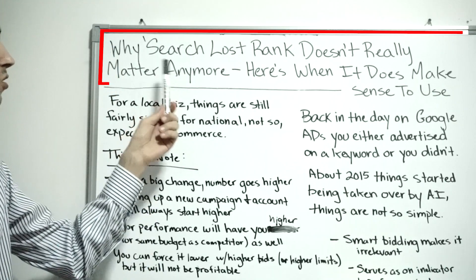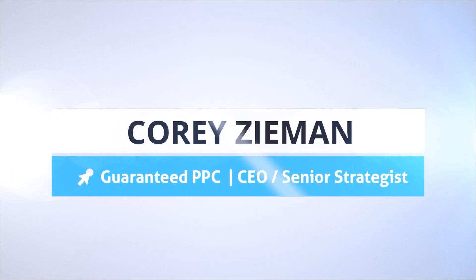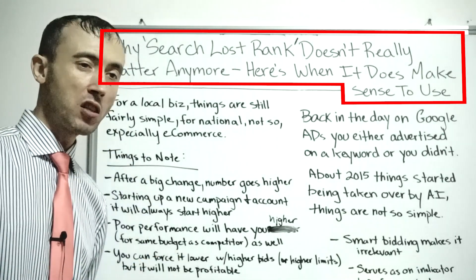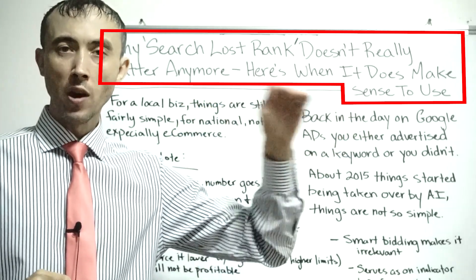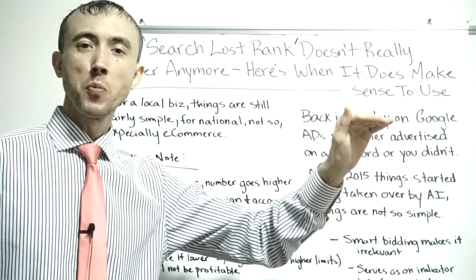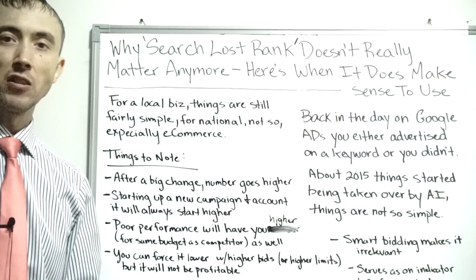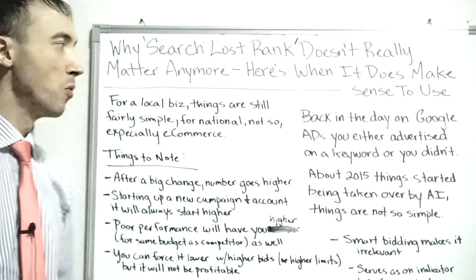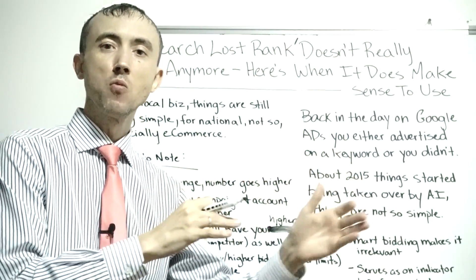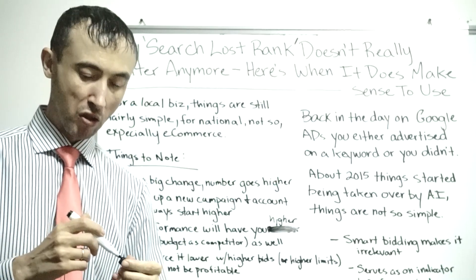Today's video we're going to talk about the Search Lost Rank, which you can see in your Google Ads account charts. It basically tells you the percentage of times out of a hundred that your ad was going to show for a certain keyword that you're bidding on but didn't. So if there are a hundred searches per day and you show up 65 times, your lost rank is roughly 35 percent. It tells you how many times you didn't show up even though you wanted to - as opposed to Search Impression Share, which is different.